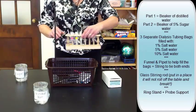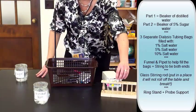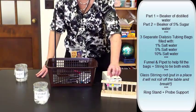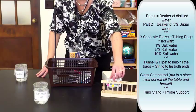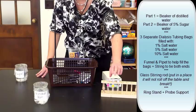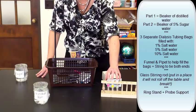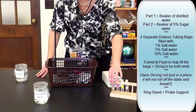You will have a test tube rack, and there are three test tubes. It has three different ratios: 1% salt, 5% salt, and 10% salt. These are the ones you will put in your dialysis bags when we make those shortly.